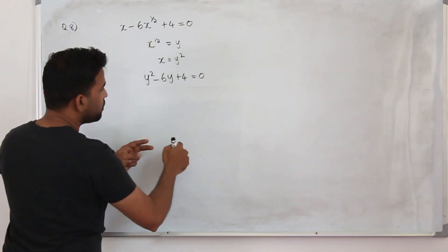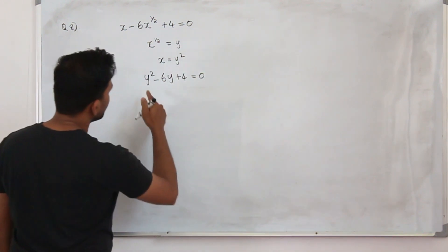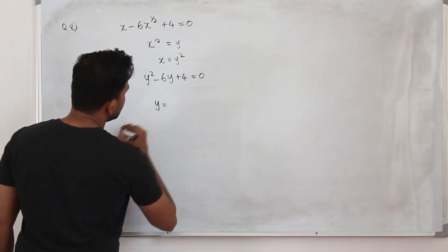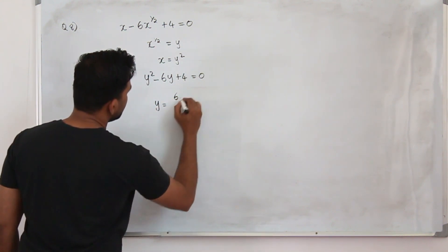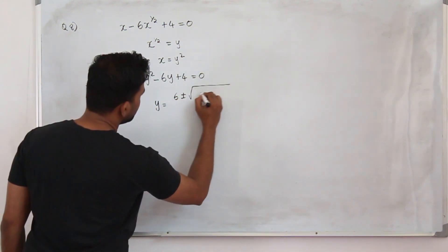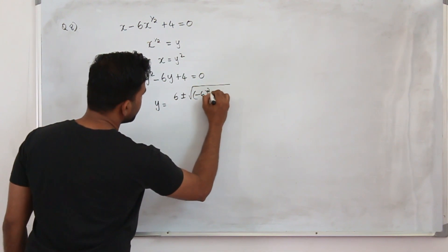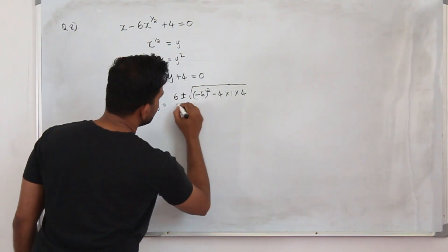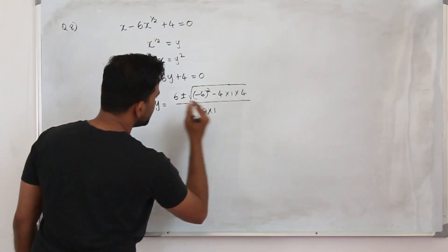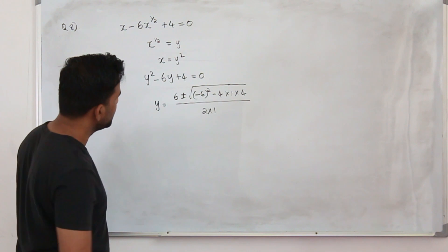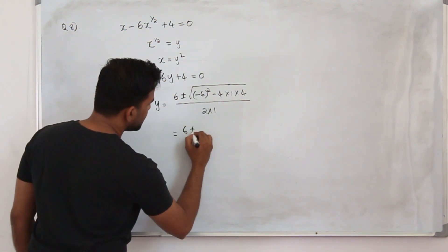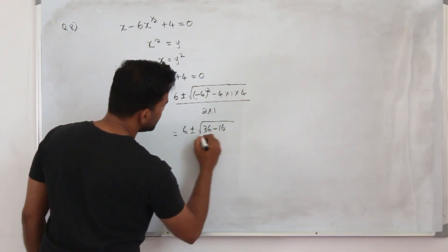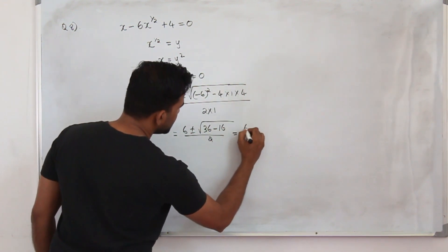Solving: find two y values, then replace y by x to the power half and solve again. Using the quadratic formula, y equals minus b plus or minus square root of b squared minus 4ac, divided by 2a. So it will be 6 plus or minus square root of 36 minus 16, divided by 2.